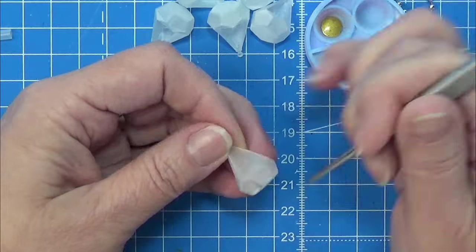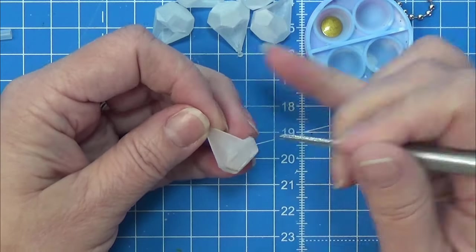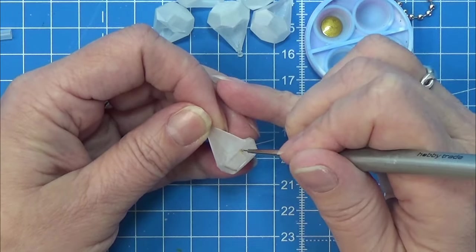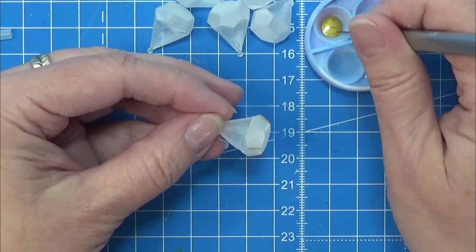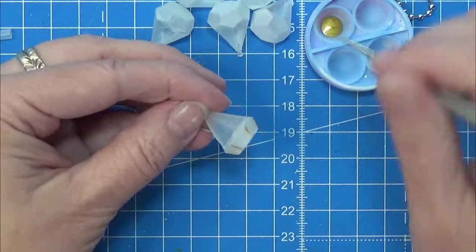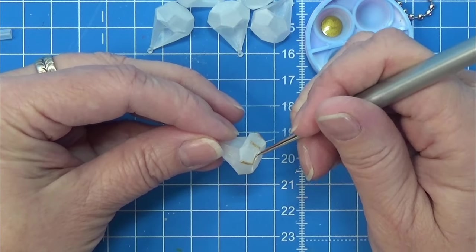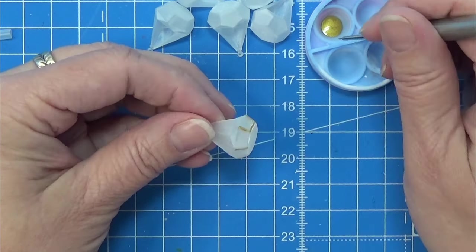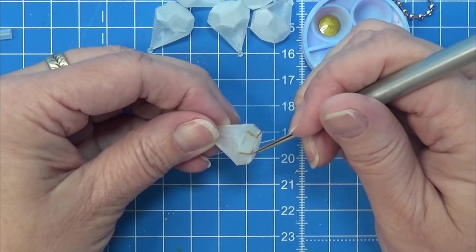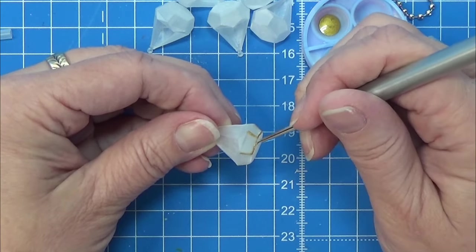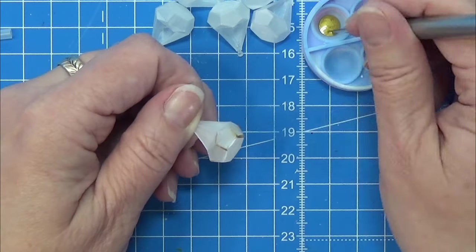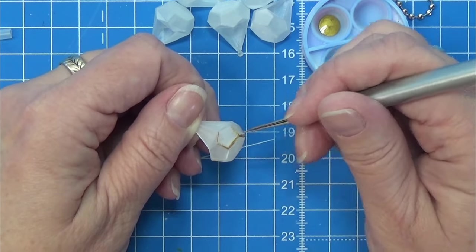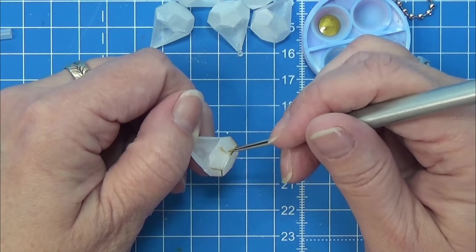Right now I'm just painting on the gold details with my Vallejo gold and I'm just taking my time and making the lines or the connection between the different glass plates visible with the paint. So take your time and just paint them. You will find a link in the info box below for the print file of these.